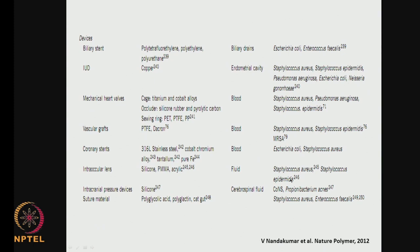These are the common bacteria which colonize, and as shown in the previous slides the environment could be blood, urine, or different types of fluids including cranial fluids and cerebrospinal fluids. So we have metals, non-metals, polymers, and ceramics — they all have these types of infection.